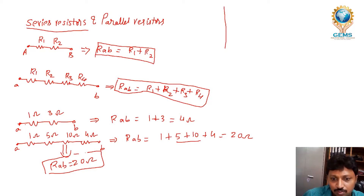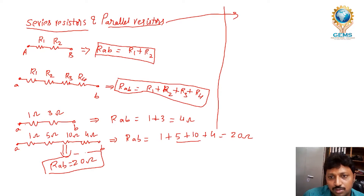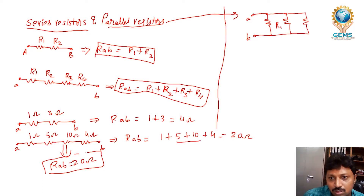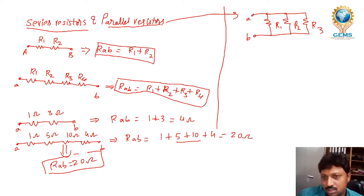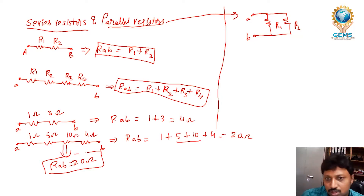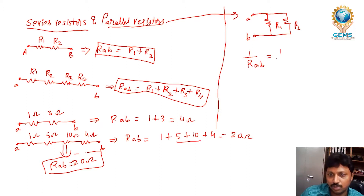Now we look at parallel resistors. In a parallel circuit with resistors R1, R2, and R3 connected between A and B, we start with just two resistors. The formula is: 1 by RAB is equal to 1 by R1 plus 1 by R2.